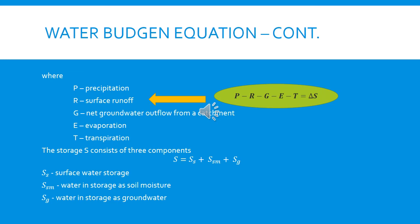The storage S consists of three components: surface water storage (S_s), water in storage as soil moisture (S_sm), and water in storage as groundwater (S_gw). Note that S here refers to total storage, not the change in storage ΔS.